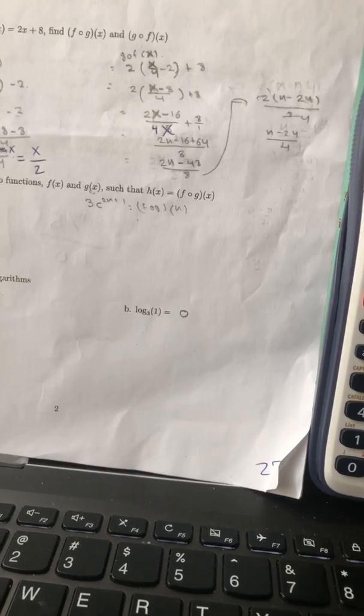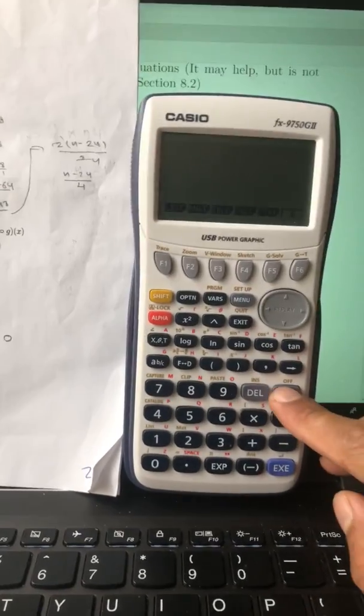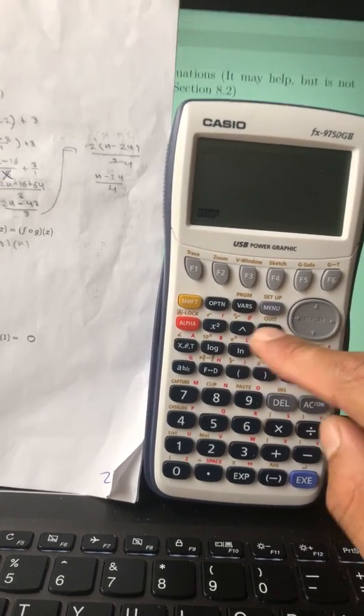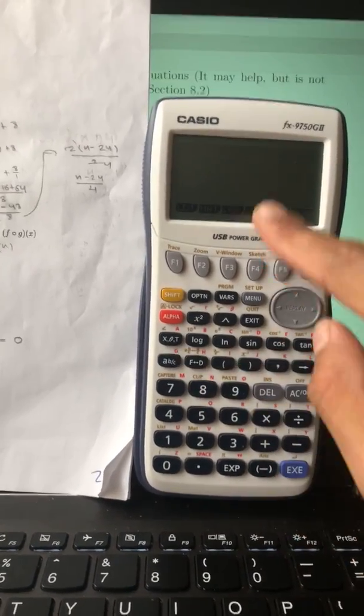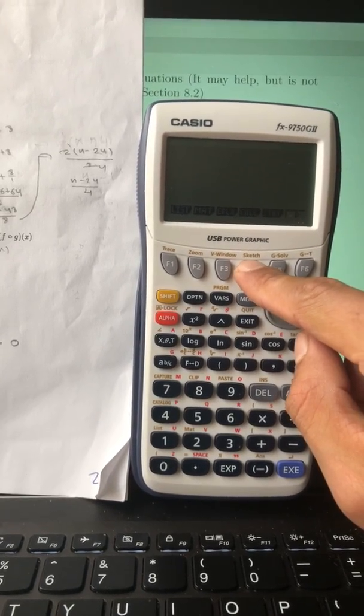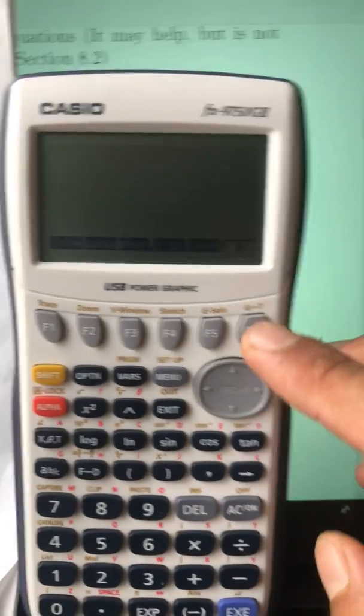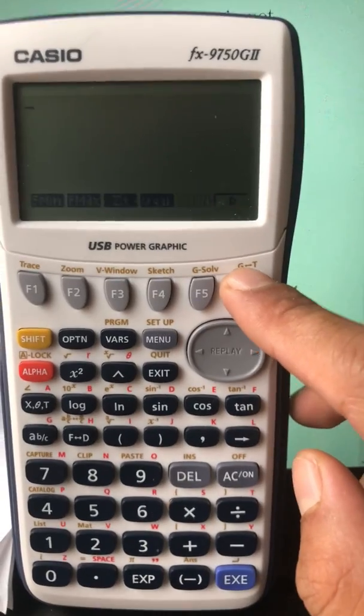The problem is log base 4 of 1 over 16, which equals negative 2. Let's go to the calculator. First, go to OPTN, then press F4, and after that press F6 until you